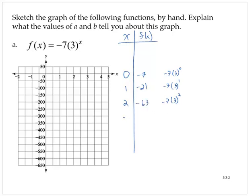Continuing this pattern, if x was 3, we would have negative 189. And if x was 4, we would have negative 567.